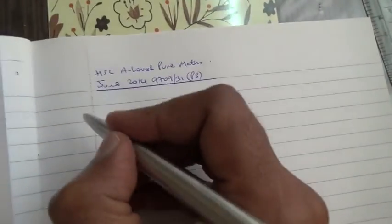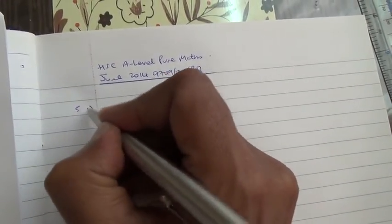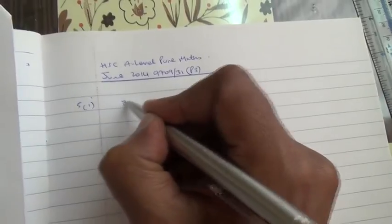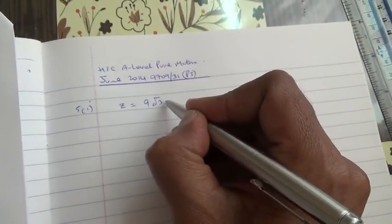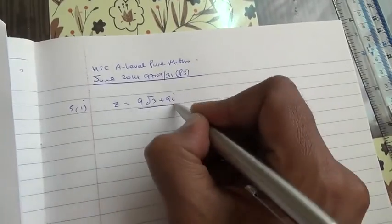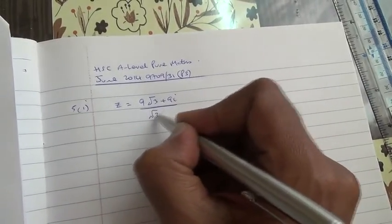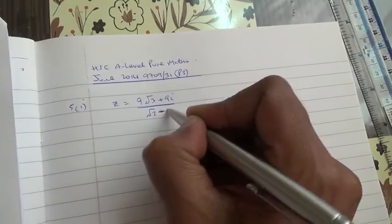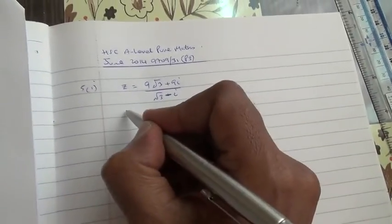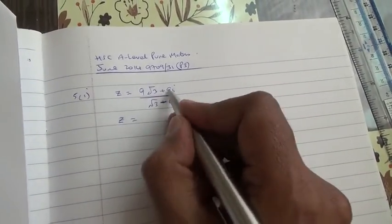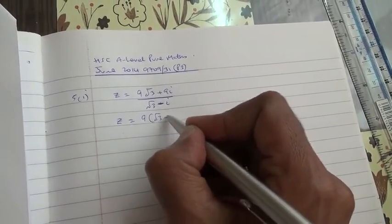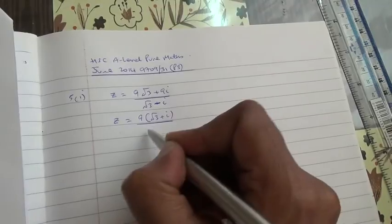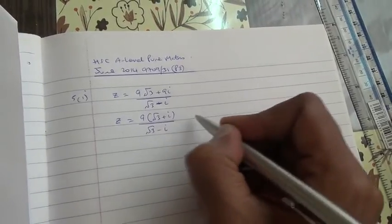Now, for the first part, we have z equals 9√3 plus 9i divided by √3 minus i. Okay, so first of all, what we can do is factorize this by putting the 9 outside, we have √3 plus i inside, divided by √3 minus i.